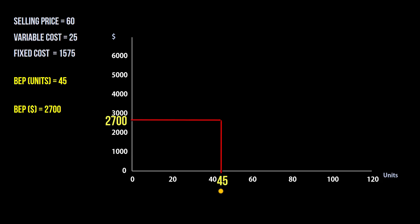Now the fixed cost is the same for any volume of production. So we draw a horizontal line for fixed cost here at 1575.